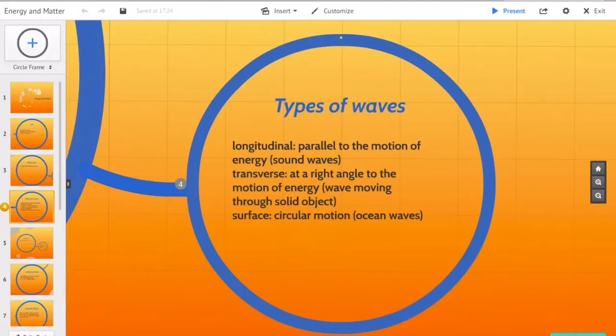And then we have surface waves. Surface waves are particles traveling in a circular motion. Examples of surface waves are waves in the ocean or ripples in a cup of water.